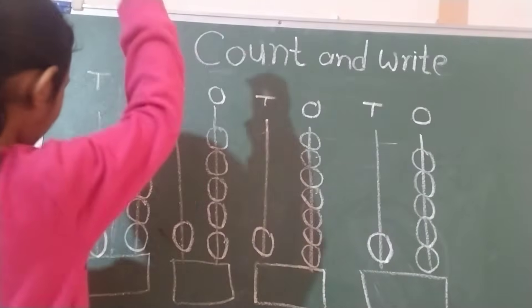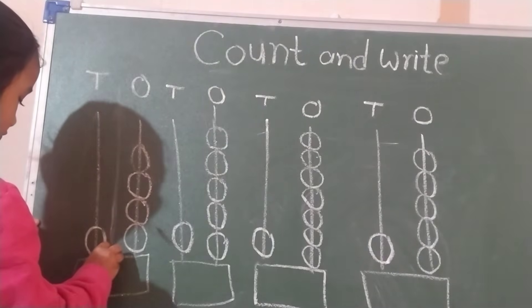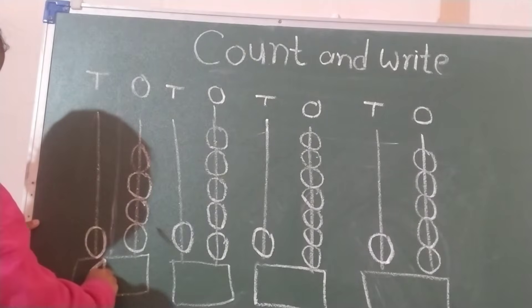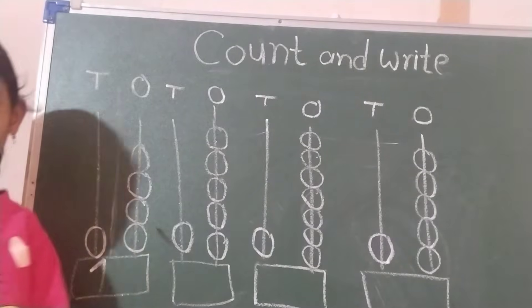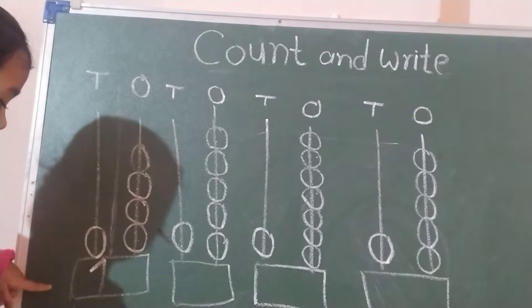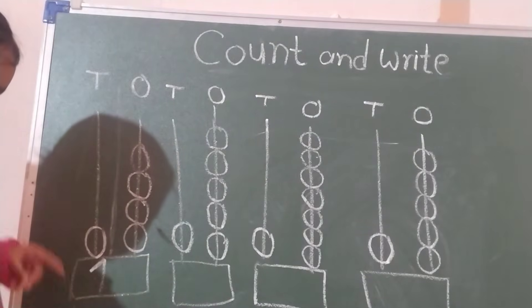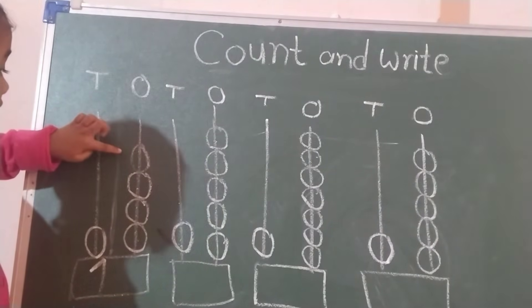Here we count the two digit numbers that is ten plus number. So we start from eleven to twenty with the help of Abacus tool. Start Parmi, count the object. One. This is one. One in ten plus. And unit is one. Unit plus one.